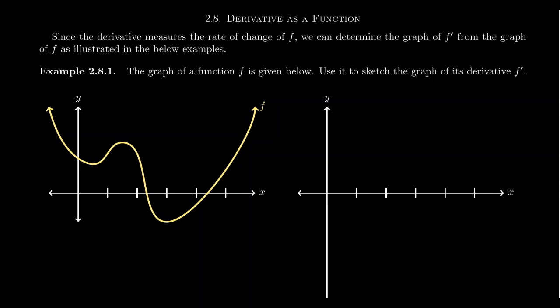Since the derivative measures the rate of change of f, we can determine the graph of f' from the graph of f, as illustrated in the following examples. Consider the function f whose graph is given like so — the formula that produces this graph, I'm deliberately not providing, because we're not going to do the derivative calculation algebraically. We're going to do it purely geometrically.